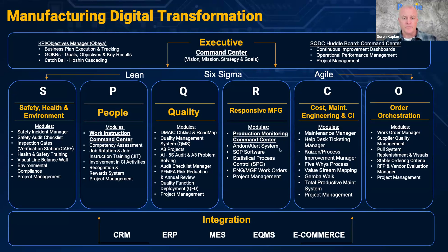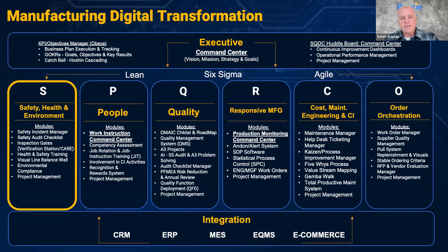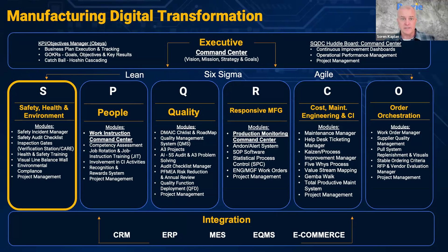Within the Lean world, for example, you will have safety, health, and environment — things you're already doing there. Looking at how you can manage your safety incidents better through digital technology, looking at how you can create inspection gates or look at environmental compliance or project management, making sure everything is not in Excel files or on whiteboards or manual huddle boards, but really digitized — leveraging technology that you can connect together through workflows as well as artificial intelligence. So environmental health and safety.